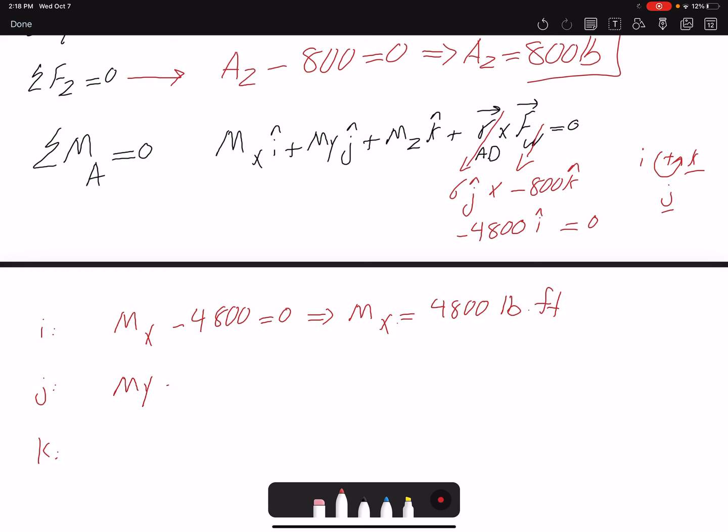J component, we only have MY zero. Z component or k component, we only have MZ zero.